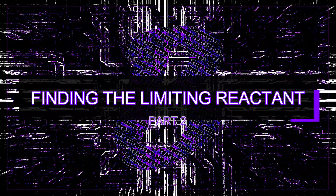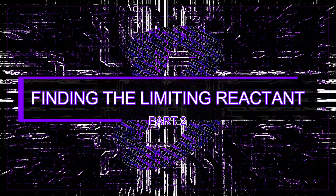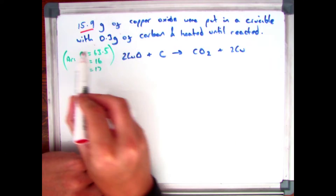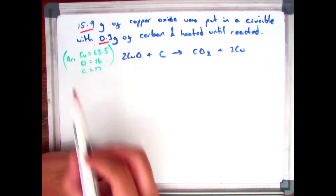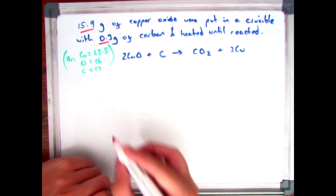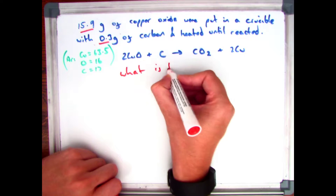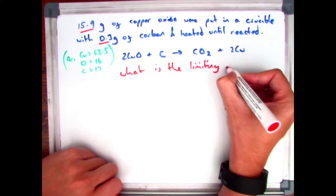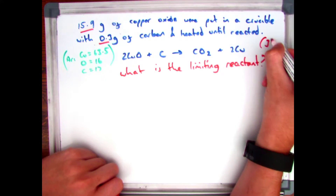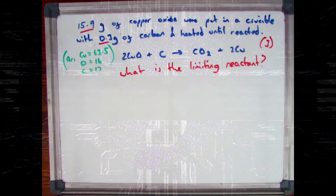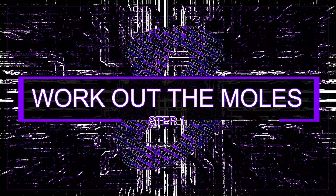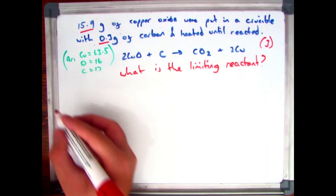Let's move on to the second part of this video: how to find the limiting reactant. You might get a question that says 15.9 grams of copper oxide was put into a crucible with 0.3 grams of carbon and heated until reacted. You're given the atomic masses and the balanced symbol equation and asked what is the limiting reactant. The first step, like in the previous sections, is to work out the number of moles.